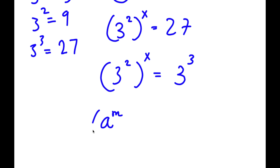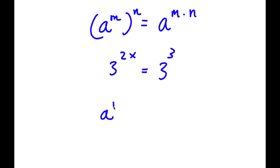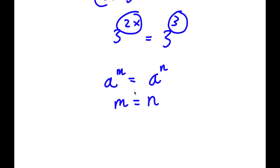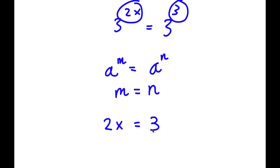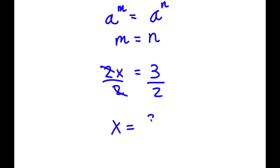If I have something in the form a to the power of m to the power of n, this equals a to the power of m times n. So 3 to the power of 2 to the power of x equals 3 to the power of 2x, and this equals 3 to the power of 3. Since the bases are equal, the exponents must be equal, so 2x equals 3. Dividing both sides by 2, x is equal to 3 over 2.